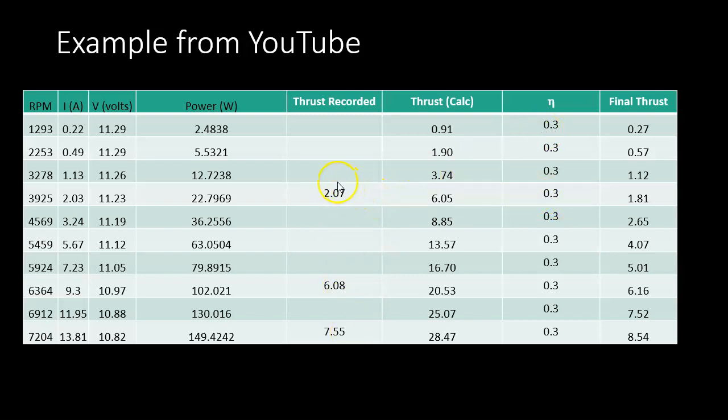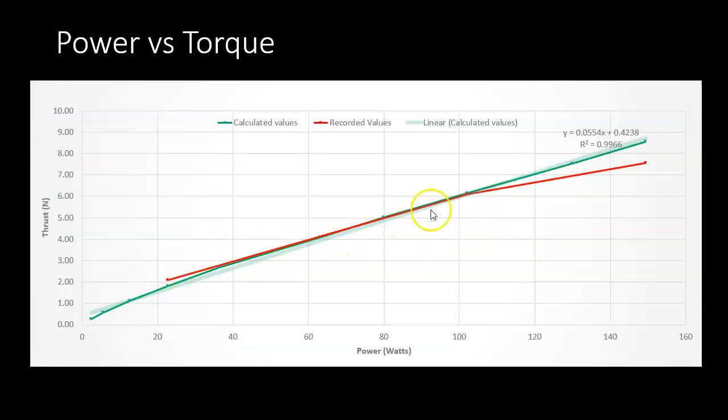I eventually settled with a value of 0.3 or 30 percent efficiency. For these three values, you can see the calculated thrust was 6.05 newtons (it's a small propeller), and the recorded value was 2.07. If I multiply 6.05 by 0.3, I get 1.81 compared to 2.07. Here we have 6.08 versus 6.16, and 7.55 versus 8.54. It's reasonably close.